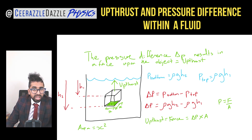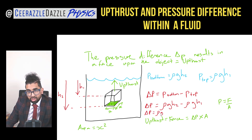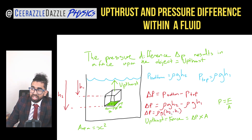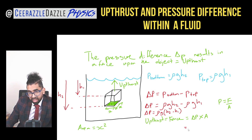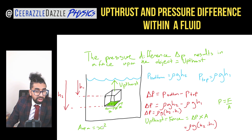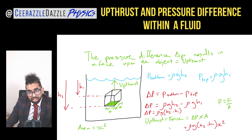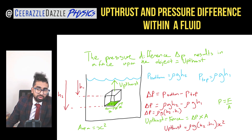We can factorize the pressure difference formula: delta p equals rho g times open bracket h2 minus h1 close bracket. Substituting that in, the upthrust formula becomes: rho g times (h2 minus h1) times the area x squared. So the upthrust can be calculated as the pressure difference times the area.